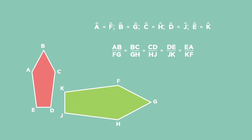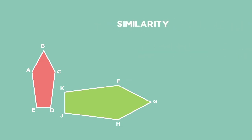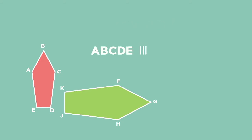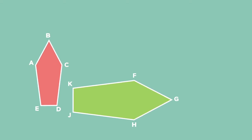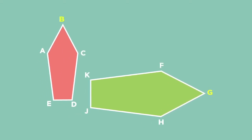Since a pentagon has five sides and five interior angles, there are five pairs of corresponding angles and five pairs of corresponding sides. The symbol to indicate similarity is three vertical lines. We can write A, B, C, D, E is similar to F, G, H, J, K. The order of the letters of the vertices of the similar shapes is very important, as it shows which corresponding angles are equal and which sides are in proportion.